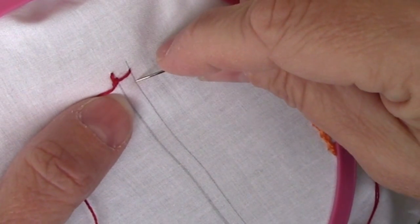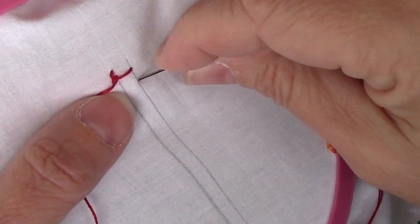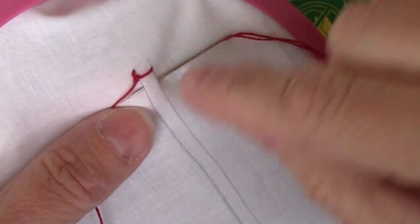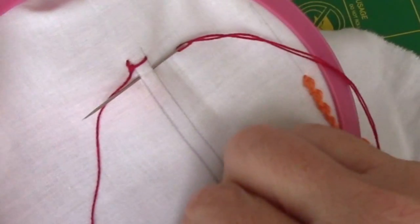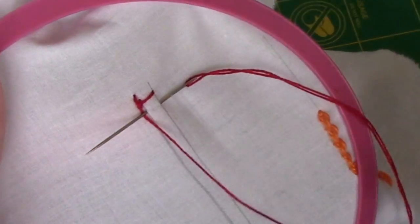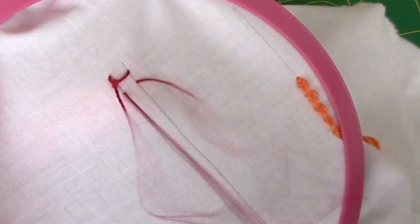Then we go forward a stitch length, go down on the bottom line, up on the top, perpendicular to where we went down over here. Pull through.